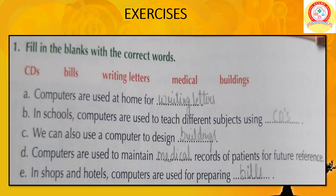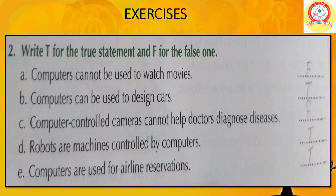Question 2 — Write T for true and F for false. A: Computers cannot be used to watch movies — False. B: Computers can be used to design cars — True. C: Computer-controlled cameras cannot help doctors diagnose diseases — False; with the help of computers, doctors can diagnose diseases. D: Robots are machines controlled by computers — True. E: Computers are used for airline reservation — True.